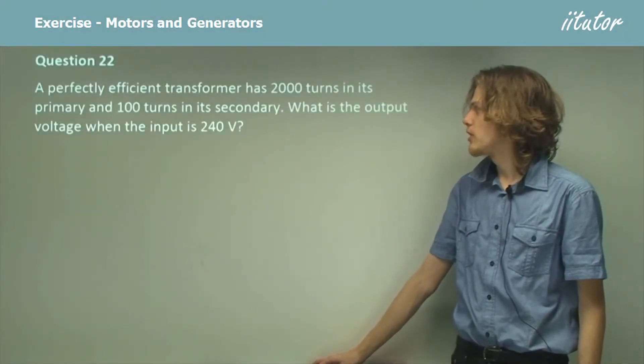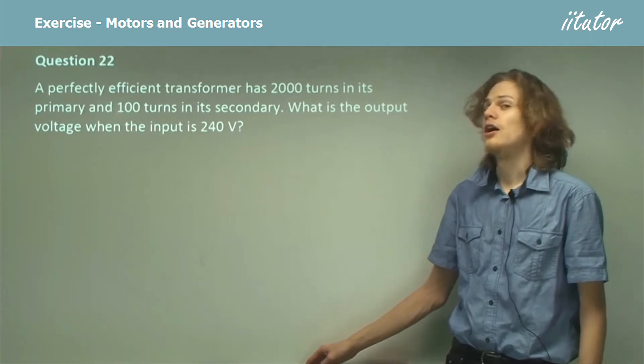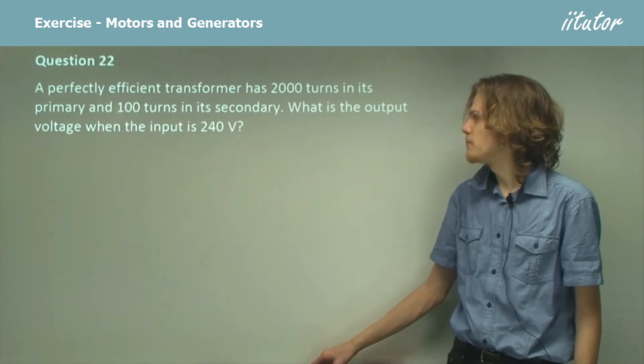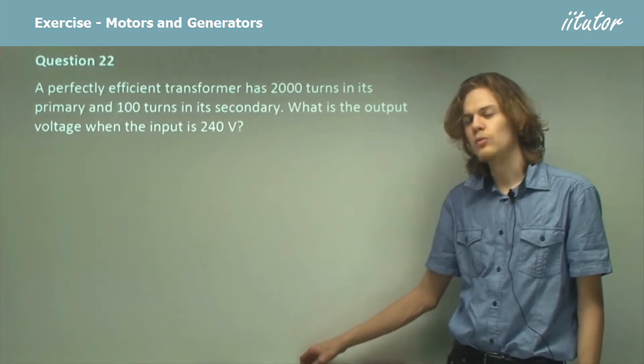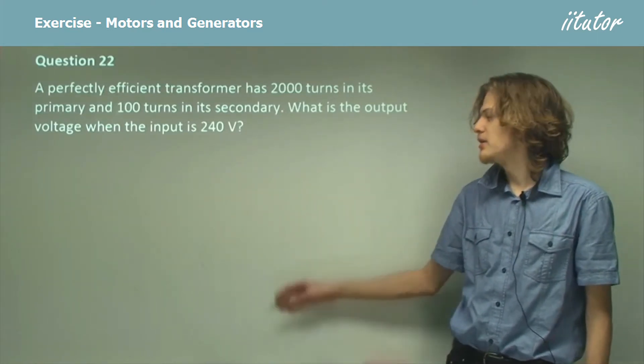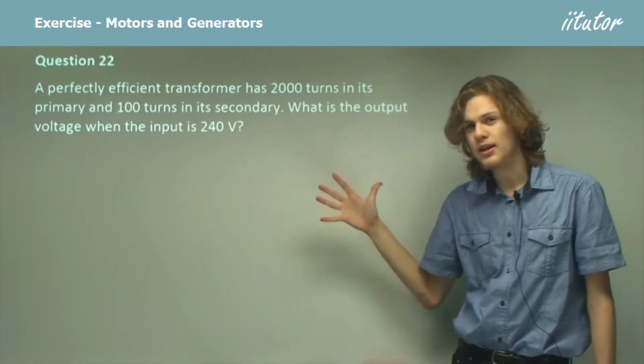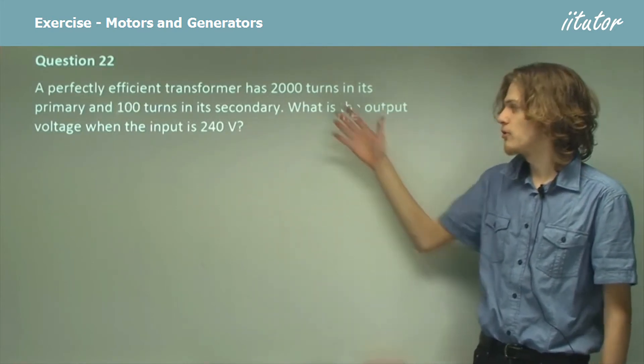A perfectly efficient transformer has 2,000 turns in its primary and 100 turns in its secondary. What is the output voltage when the input is 240 volts? Now remember here that the proportion of input and output volts is the same as the proportion of input and output turns.